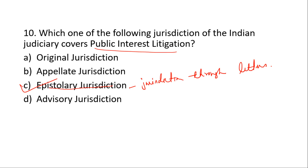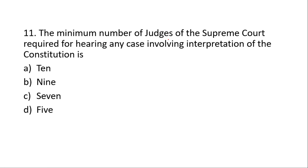The next question is: what is the minimum number of judges of the Supreme Court required for hearing any case involving interpretation of the Constitution? The answer is five — a minimum of five judges is required for constitutional interpretation cases.